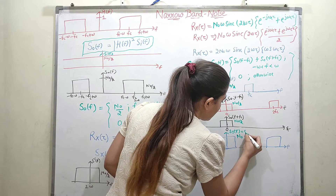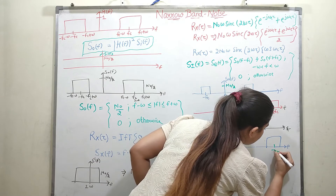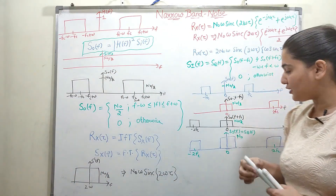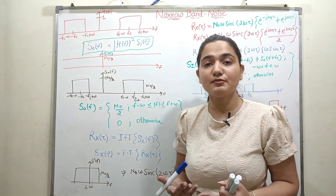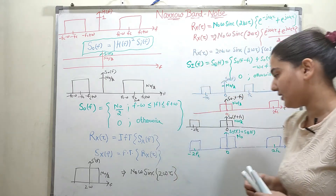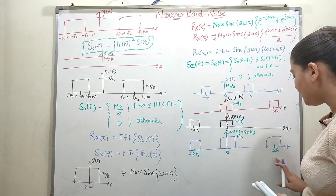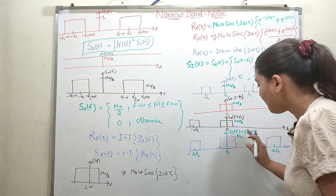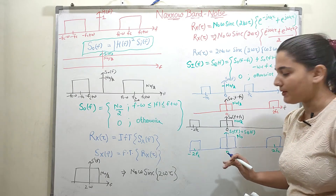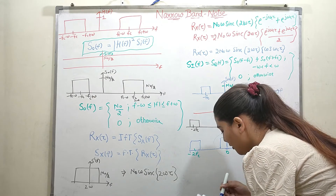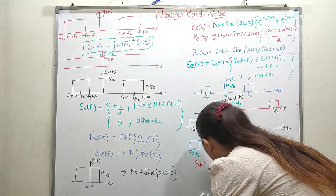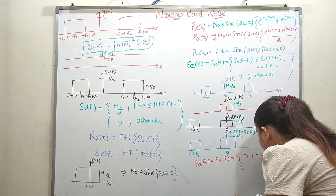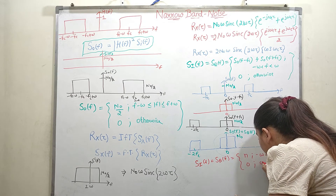S_I(F) = S_Q(F). The combined signal is centered around 0, around +2Fc, and around −2Fc. Since the in-phase and quadrature components are slow-varying low-frequency signals, Fc is very high, so 2Fc and −2Fc represent very high frequencies not present in these components. Therefore only the low-frequency portion remains: S_I(F) = S_Q(F) = N₀ for |F| ≤ W, and 0 otherwise.